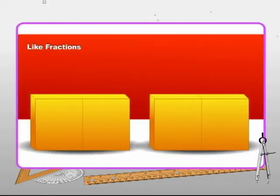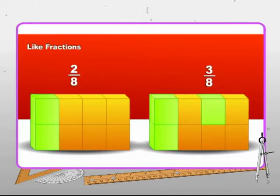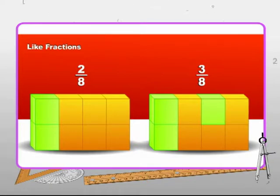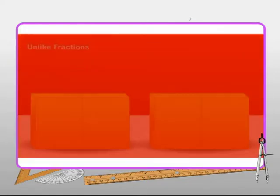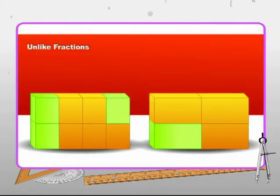The second type of fraction is like fractions. These are the fractions having the same denominator. For example, two by eight and three by eight — both fractions have eight as their denominator. Unlike fractions are those which have different denominators.